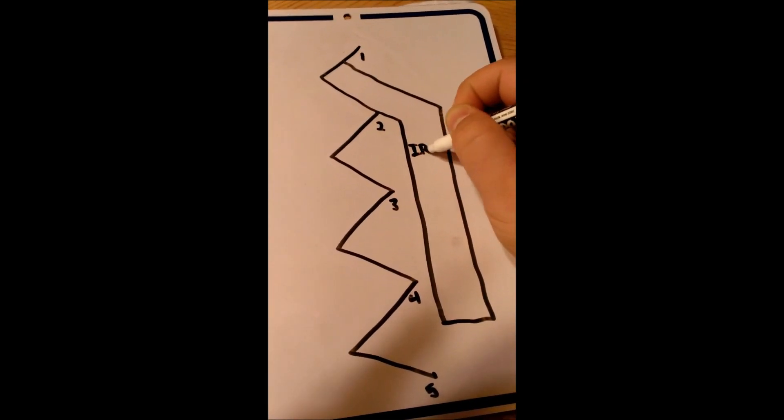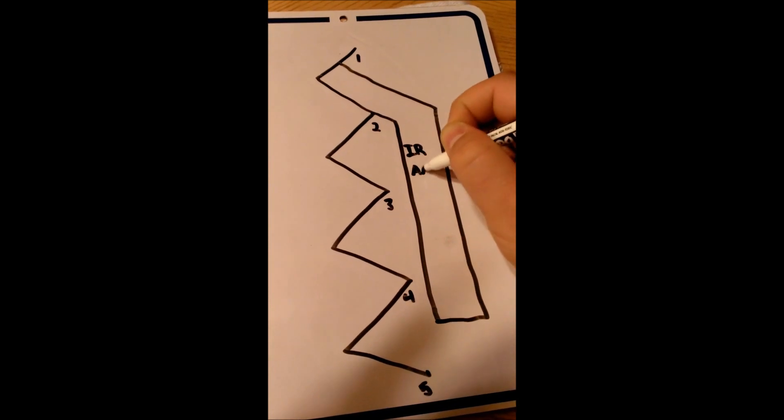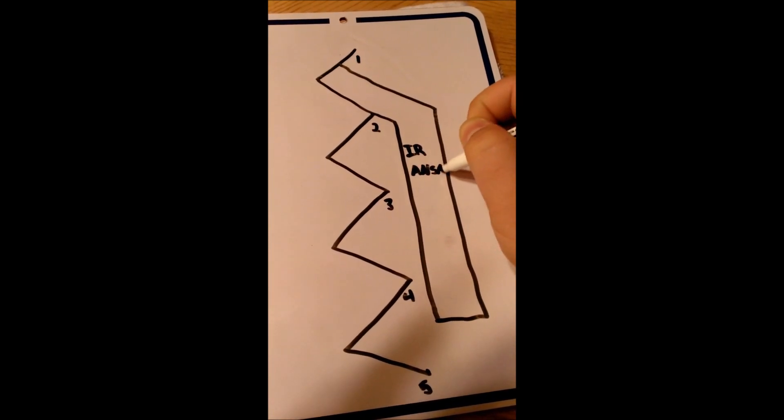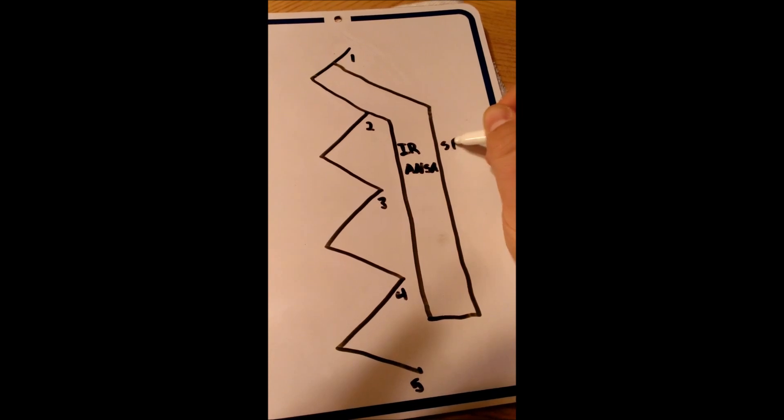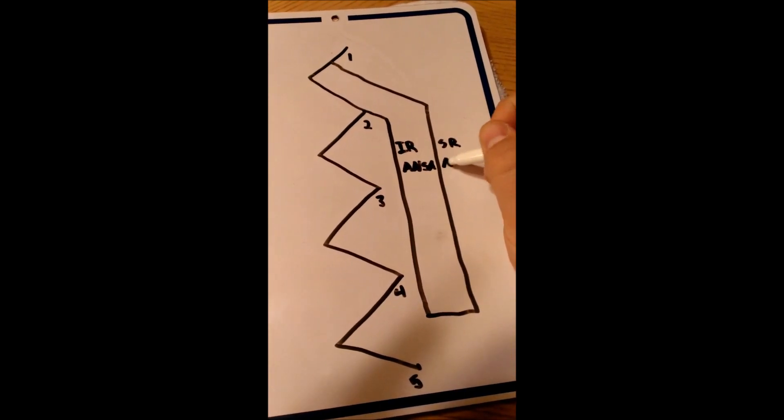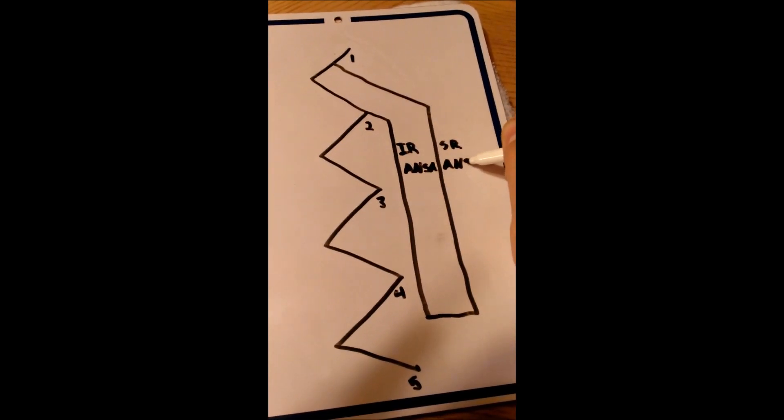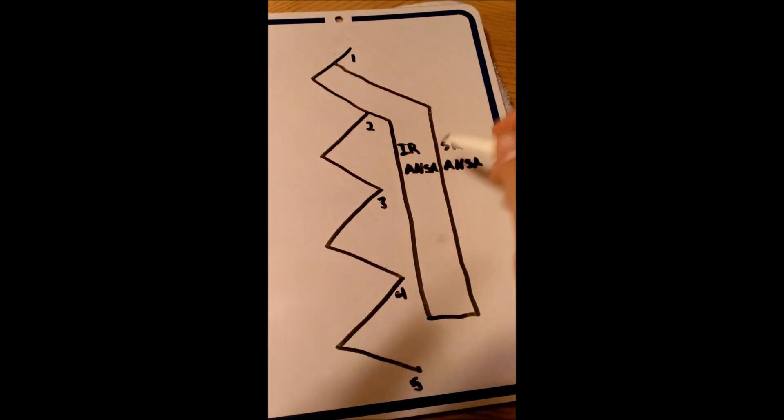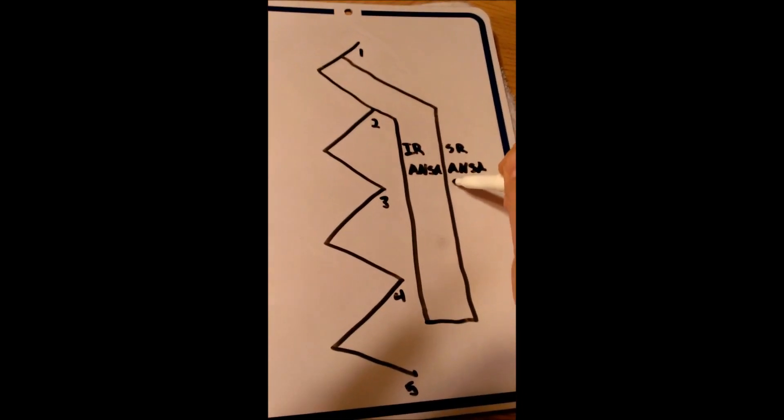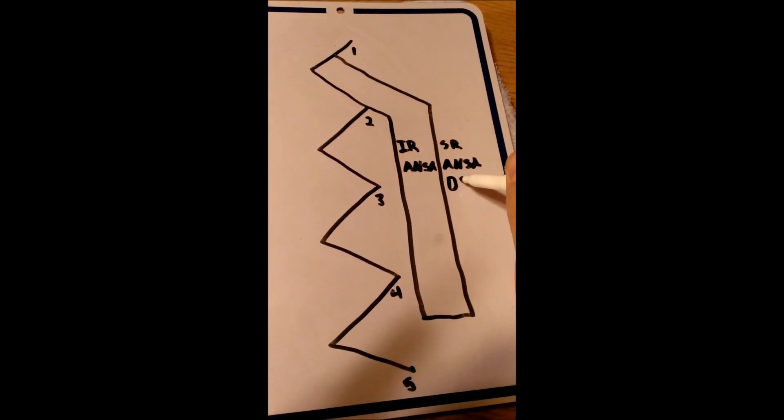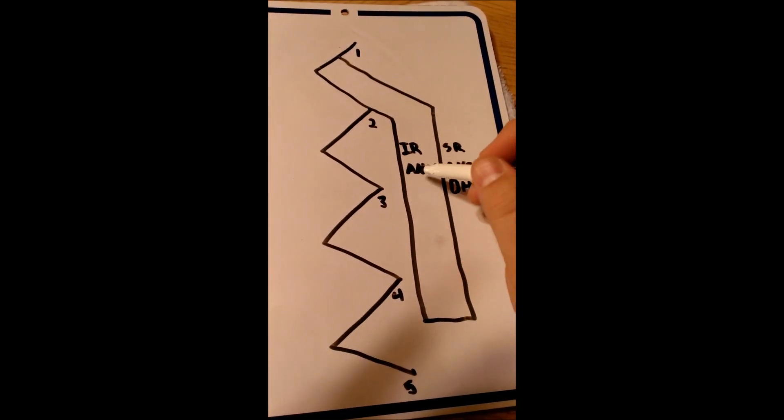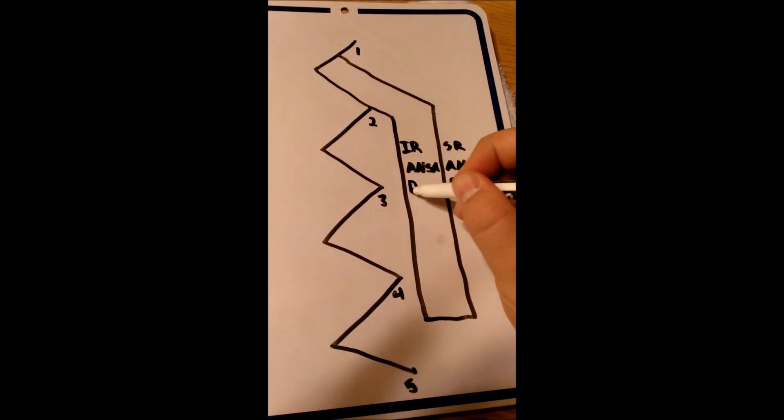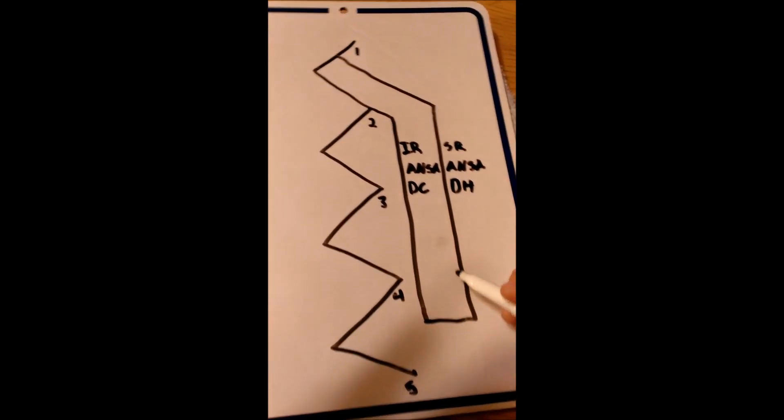You can label it however you want. I just chose to put in enough letters that it would remind me of what it was actually called. So if at any point in time I mispronounced these, sorry I'm still learning them myself. We have to know that this is the descending hypoglossal, and this is the descending cervicalis.